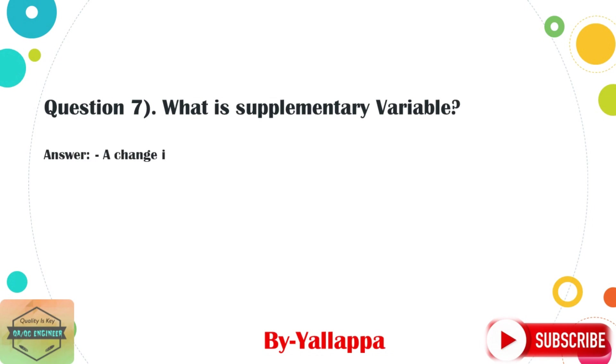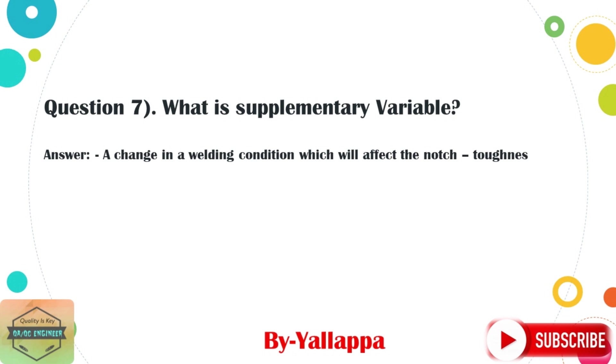Question 7: What is a supplementary essential variable? Answer: A change in a welding condition which will affect the notch toughness properties of the weldment. In this condition, the supplementary essential variable becomes an additional essential variable.